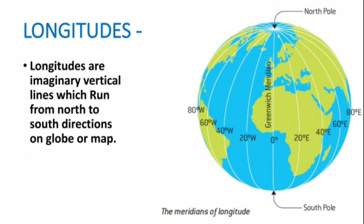The next topic is longitude. These are vertical lines on a map or globe that run from north to south — that is, from the North Pole to the South Pole. Longitudes are all of equal length. However, they are not parallel — the distance between two longitudes is not equal everywhere. The distance is less near the poles and increases toward the equator.